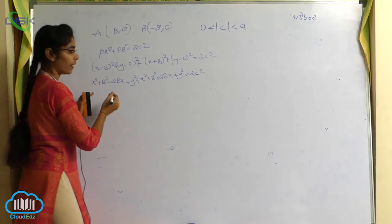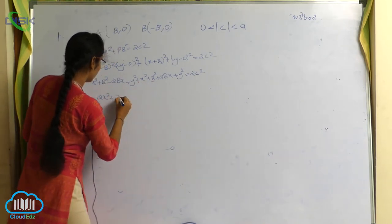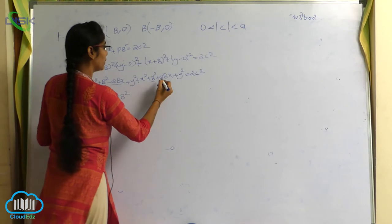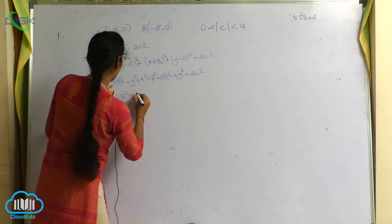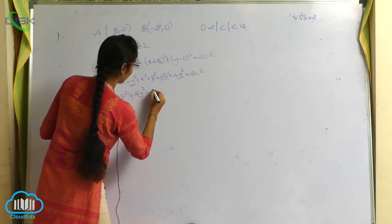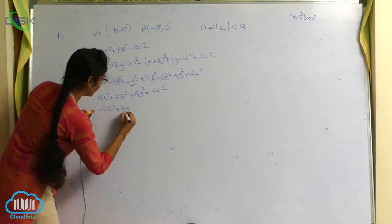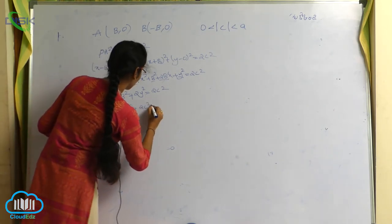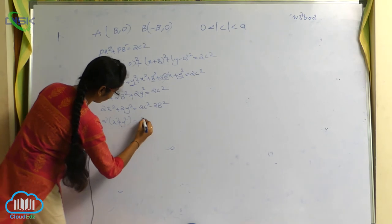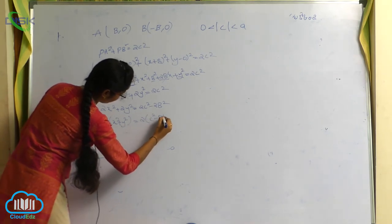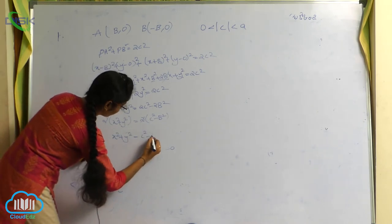Collecting terms: 2x square plus 2b square minus 2bx plus 2bx — the 2bx terms cancel — plus 2y square equals 2c square. Taking 2 as common: x square plus y square equals c square minus b square. The 2 cancels on both sides, giving the final result: x square plus y square is equals to c square minus b square.